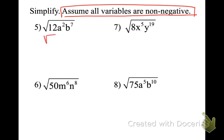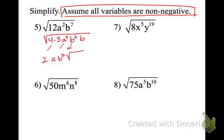For √(12a²b⁷): I'm breaking 12 down to 4 times 3. I've got a squared, and then b to the 6th times √b. I pull out a 2, I pull out an a, and I pull out b to the 3rd. What stays under the radical is 3b. You might like to say: I used this, I used this, I used this — what stays under the radical is that 3b.